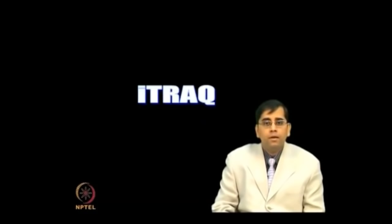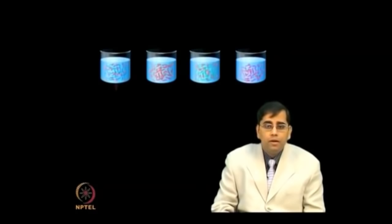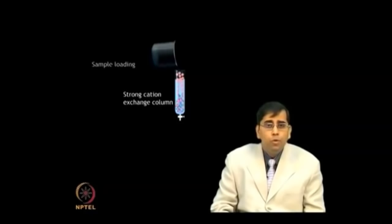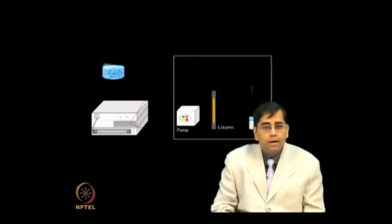iTRAQ is an MS-based technique for relative and absolute quantitation of proteins. iTRAQ reagents are a set of 4 isobaric amine-specific labeling reagents: 114, 115, 116, and 117. Each iTRAQ reagent consists of a reporter group, a balancer group, and a peptide-reactive group. Labeled samples are purified on a strong cation exchange (SCX) column to remove excess unbound reagent. These isobaric labels are detected upon fragmentation and release in mass spectrometry.